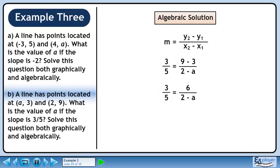9 minus 3 is 6. Cross multiply to get 3(2 - a) = 30. Divide both sides by 3 to isolate the binomial containing a.